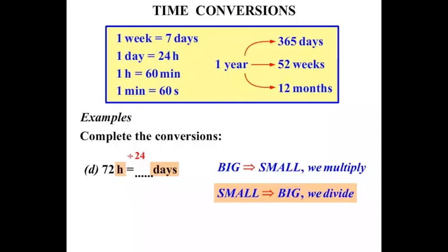So we have 72 divided by 24. In other words, how many times does 24 go into 72? It goes in 3 times. So 72 hours is the same as 3 days.